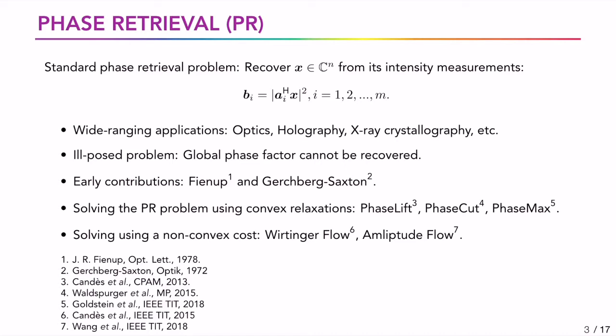The PR problem is ill-posed as we can have multiple solutions to a given set of observations. This can be easily verified by observing that minus x and plus x result in the same set of observations for any choice of A. This is true for any phase factor. Hence, the recovery cannot offset for these ambiguities. Early contributions to solving this problem were made by Fienup and Gerchberg-Saxton. These algorithms alternate between two spaces, where you have the magnitude measurements in the measurement domain and support constraints in the image domain.